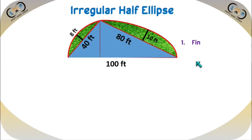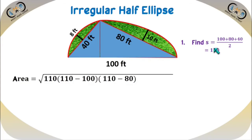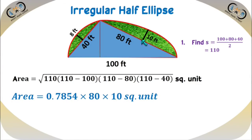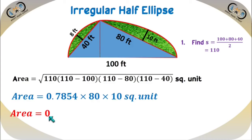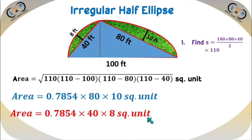The triangle area is the square root of s(s−a)(s−b)(s−c), that is square root of 110 × (110−100) × (110−80) × (110−40), which gives approximately 1519.87 square units. The area of the first half ellipse is 0.7854 times 80 times 10 = 628.32 square units. And for the second half ellipse, the area is 0.7854 times 40 times 8 = 251.328 square units. If we add these three values, we get the area of this irregular half ellipse shape.